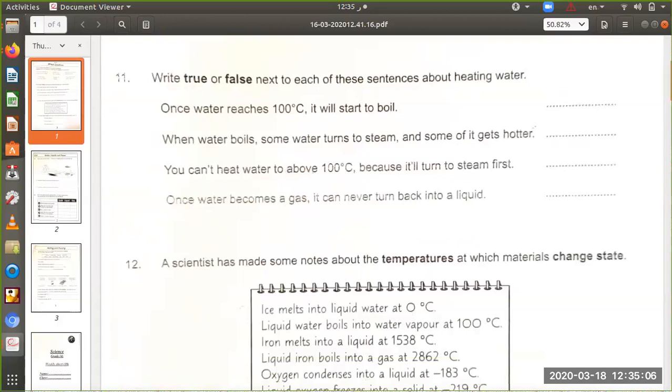True or false: once water reaches 100 degrees Celsius it will start to boil - true. When water boils, some water turns to steam and some of it gets hotter - true. You can heat water to above 100 degrees Celsius because it will turn to steam first - true. Once water becomes a gas, it can never turn back into a liquid - false, because it can turn by condensation.